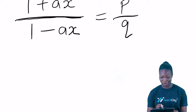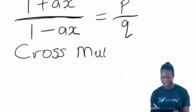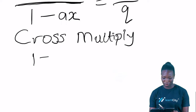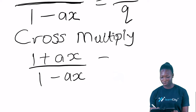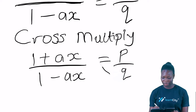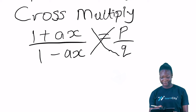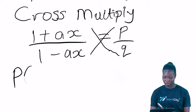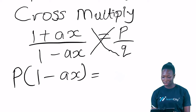To remove the fractional part we cross multiply. So (1 + ax) / (1 - ax) = p/q. Cross multiplying gives us p(1 - ax) = q(1 + ax).